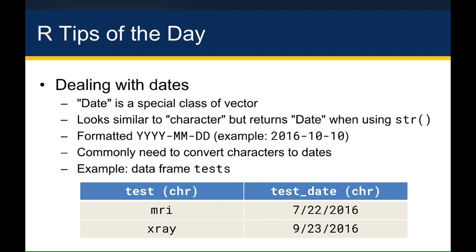Typically, if dates are coded correctly, you'll see them formatted with the year, the month, and then the date. But even if it's formatted that way, you need to make sure it's coded correctly as a date by checking the str function on the variable, or printing out the data frame and looking at that column to see if it says 'date' underneath it.